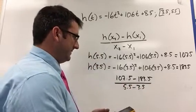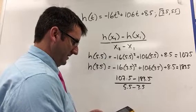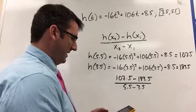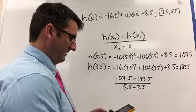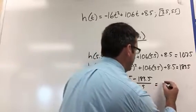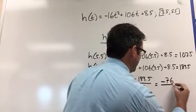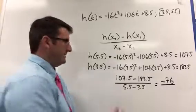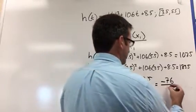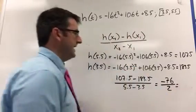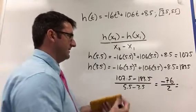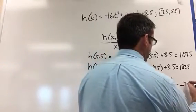So 107.5 minus 183.5 is going to be negative 76, and we're going to divide that by 2. 5.5 minus 3.5 is 2. So negative 76 divided by 2 is going to be negative 38.